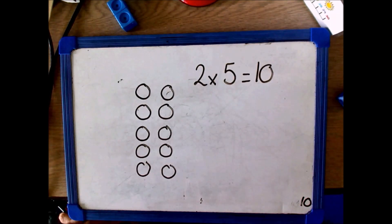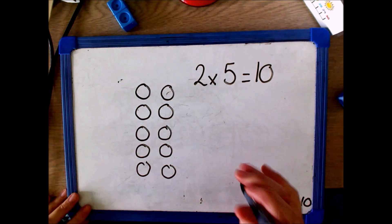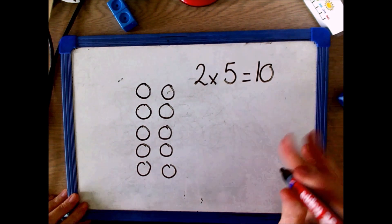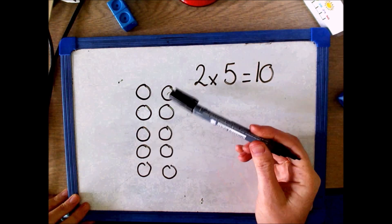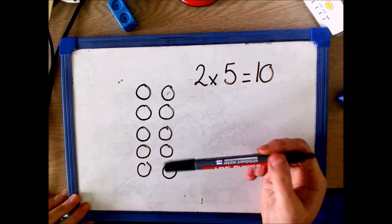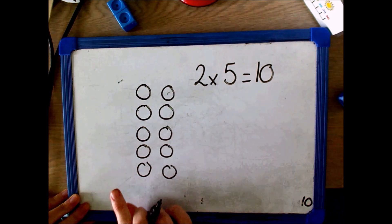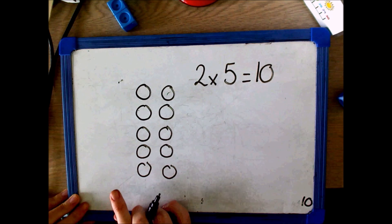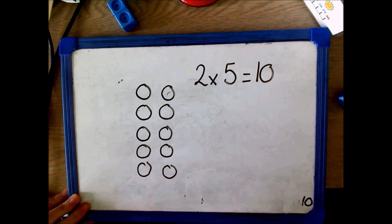We can also show this using an array. Here I have represented 2 times 5 — 2 columns of 5, or 2 groups of 5. I can now count in 5s to show the answer: 5, 10.